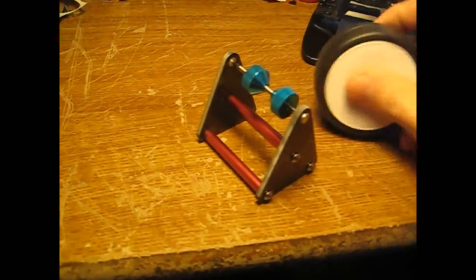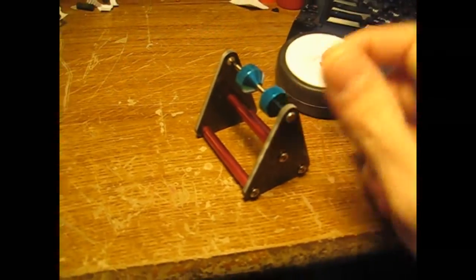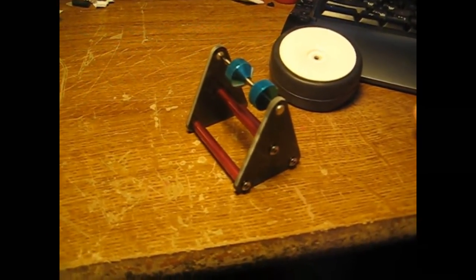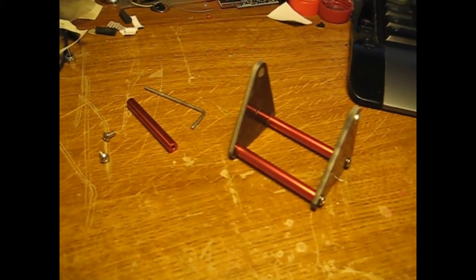But as you'll notice, you can't really fit even a little touring car wheel on here because of this bar. But that's easy. All you have to do is take the bar out and then you can fit the wheel in. Right? Just like that.